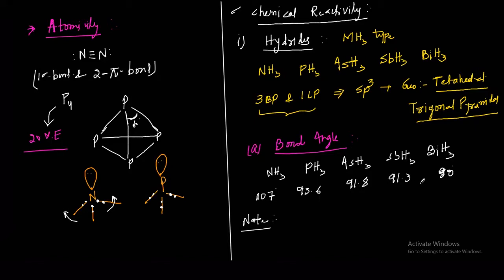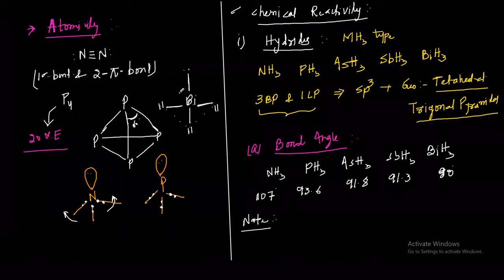In BiH3, the bond angle is approximately 90 degrees. The bonds are almost at 90 degrees to each other, with one lone pair on bismuth and the three H atoms forming a triangle — a perfect trigonal pyramidal shape.